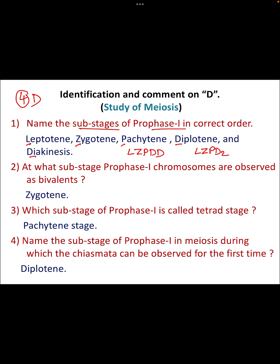The next question: at which sub-stage of prophase 1 are chromosomes observed as bivalents? That is the zygotene stage. At which sub-stage of prophase 1 is called the tetra stage? That is the pachytene stage. So in the zygotene stage you can see the bivalent, and in the pachytene you can see the tetra stage.